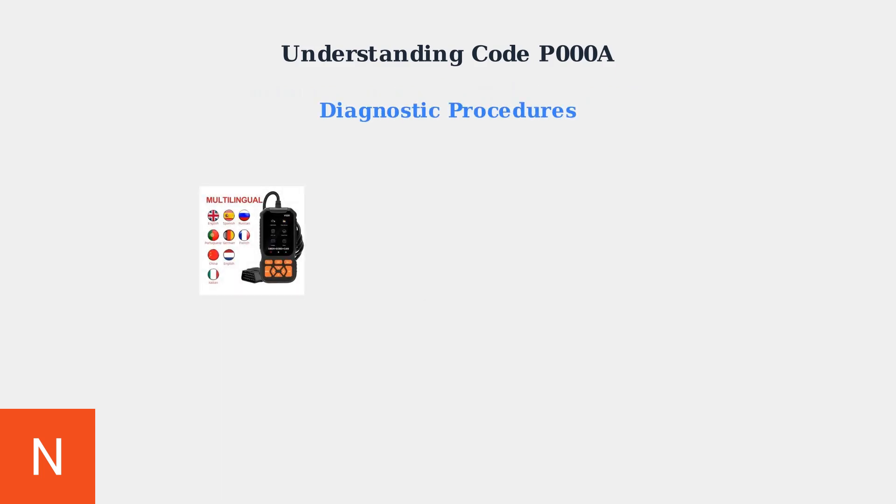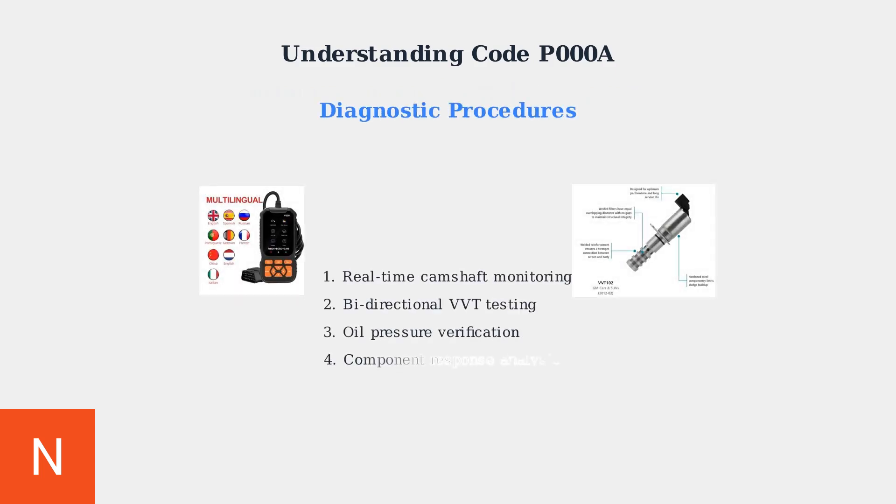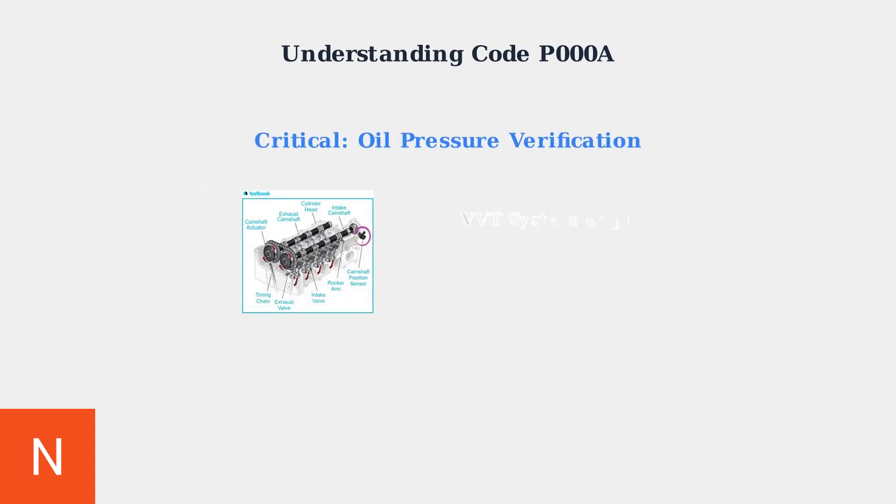Modern diagnostic procedures use enhanced OBD2 scanners to monitor camshaft position in real time with millisecond precision. These tools can perform bi-directional testing to command VVT solenoids and observe their immediate response. Always verify oil pressure at operating temperature before replacing any components. VVT systems require 15 to 80 psi of oil pressure for proper operation. Insufficient pressure will cause slow camshaft response and trigger code P000A.